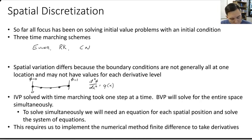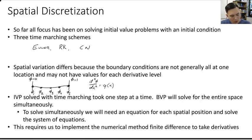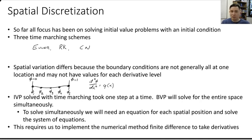We want to come up with values V1, V2, V3, V4, and V5 such that they approximately satisfy our governing equations and our boundary conditions. Initial value problems are solved with time marching, which takes one step and advances to the next. Boundary value problems will solve for the entire space simultaneously, requiring a set of equations for each spatial position — now a system of equations.